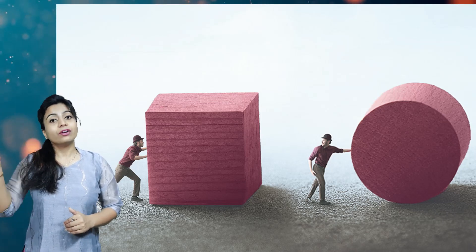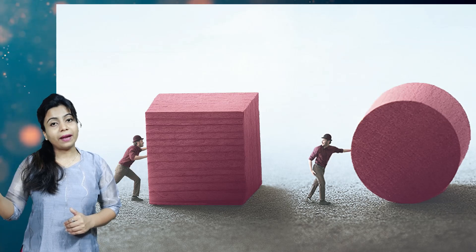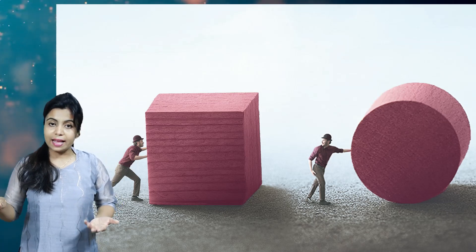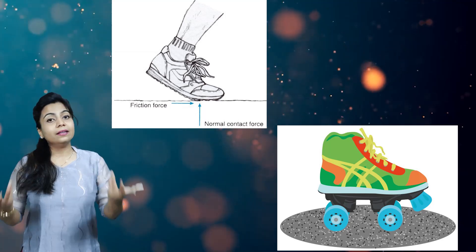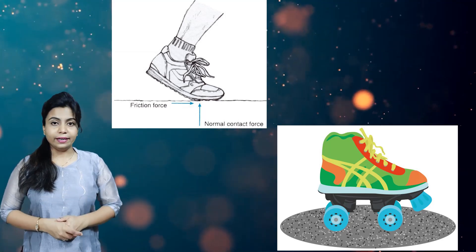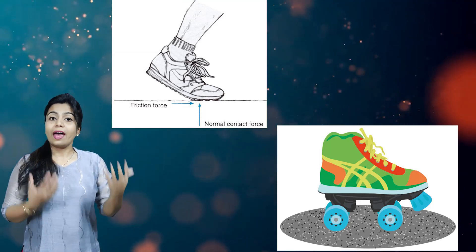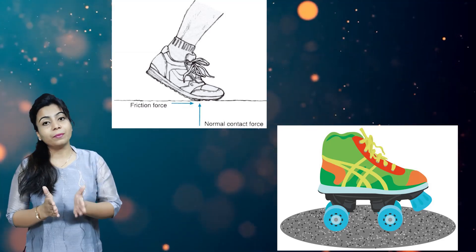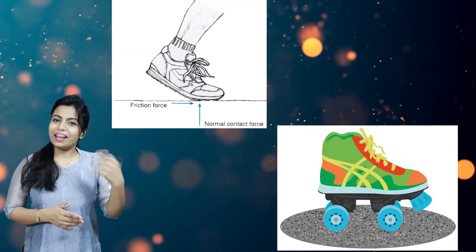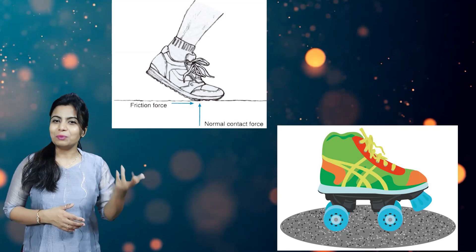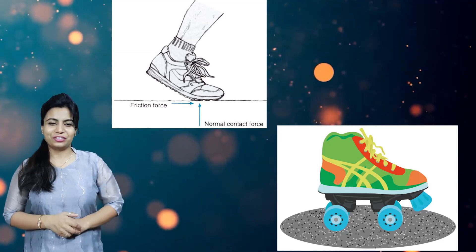Less surface is in contact with the ground in rolling friction, so less friction is applied. Rolling friction is less than sliding friction. For example, your shoes have more friction on the ground compared to roller skates. So sliding friction is more than rolling friction.